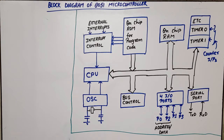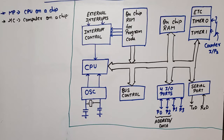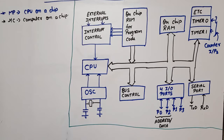Hello everyone. In this video lecture on microprocessor and microcontroller, I am going to discuss the architecture of the 8051 microcontroller. The difference between microprocessor and microcontroller is that a microprocessor is a CPU on a chip — the whole CPU fabricated on a single chip. If we fabricate the whole microcomputer — CPU, memory, peripheral devices, and timer — all together on a single chip, that is called a microcontroller. In a single line: computer on a chip.